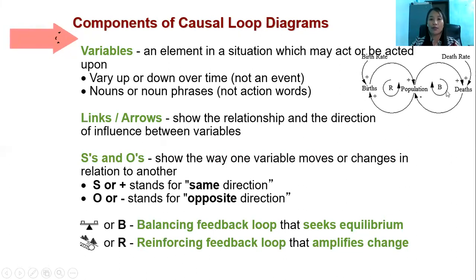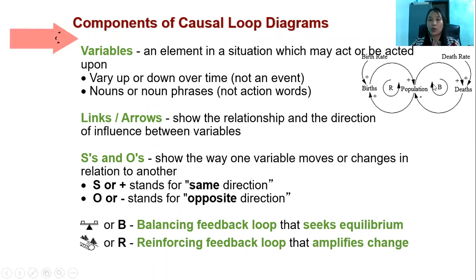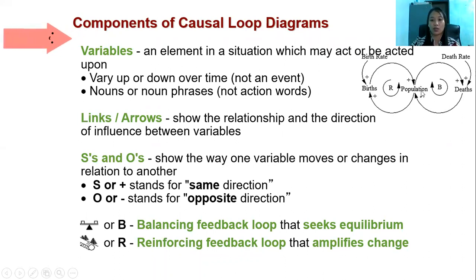We also have R and B — R stands for reinforcing feedback, where that loop amplifies change, meaning a change in one variable leads to a change in another. B stands for balancing feedback loop, which means there is an equilibrium: if one variable changes, if one increases, the other will decrease.